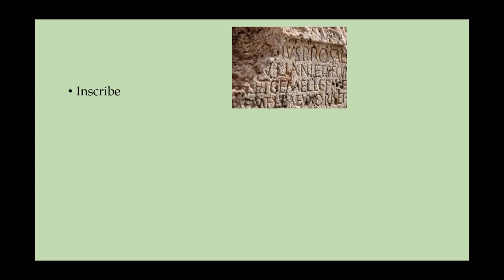Something is called 'inscribe,' with the noun being 'inscription.' 'In' means inside, and 'scribe' means to write. In the picture shown, something has been written inside or put into the wall — this is called inscribing or inscription: writing something on a wall so that you make it permanent. In ancient times there were many inscriptions written on stone tablets or walls.